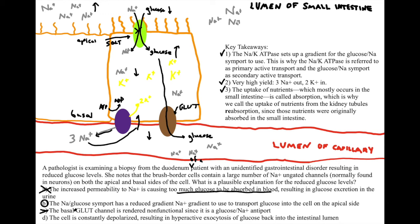And then D: the cell is constantly depolarized, resulting in hyperactive exocytosis of glucose back into the intestinal lumen. That is not true. These brush border epithelial cells generally aren't going to be too affected by depolarization as a general rule. That's not the point of why we are creating this Na+ gradient. That is definitely the case in neurons—we want an Na+ gradient that is greater outside of the cell than inside to be able to create an action potential through depolarization. But in the epithelial cell, that's not really the case. So our correct answer is B.